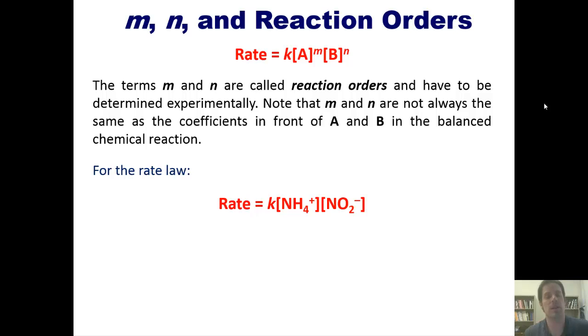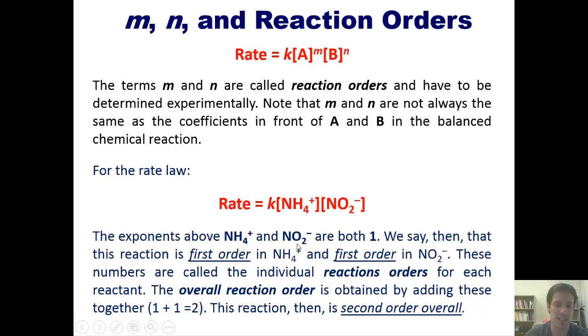For the previous rate law we discussed, the reaction of ammonium with nitrogen dioxide, we determined that if I double the concentration of ammonium, it doubles the rate. If I triple the concentration of ammonium, it triples the rate. If I double the concentration of nitrogen dioxide, it doubles the rate. What does that mean about the exponents here? It means that the exponents above ammonium and nitrogen dioxide are both one. In other words, there's a proportional one-to-one relationship between changing the concentration of each of these reactants and how the speed of this reaction changes. We say then that this reaction is first order with respect to ammonium and first order with respect to nitrogen dioxide. These numbers are called the individual reaction orders for the reactant. The overall reaction order is obtained by adding these two numbers together. One plus one equals two. This reaction then is considered to be second order overall.